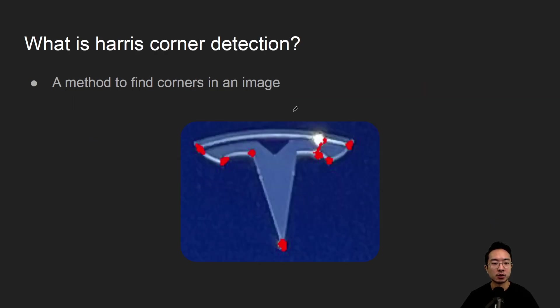So what is Harris Corner Detection? It's a method to find corners in an image. Here you can see these are some corners that it has found, and we'll see how we can actually do that in code later on and describe how it works.